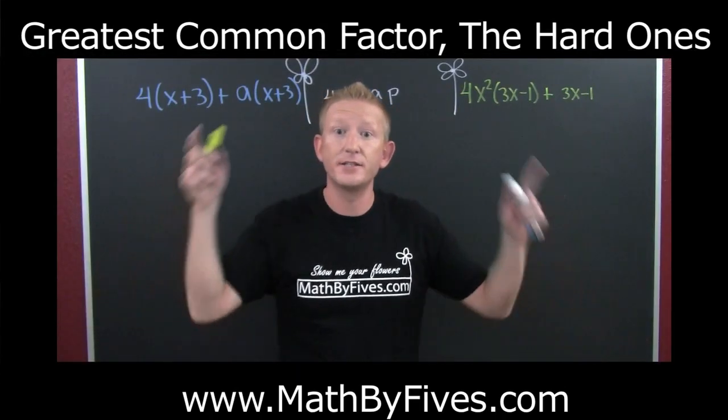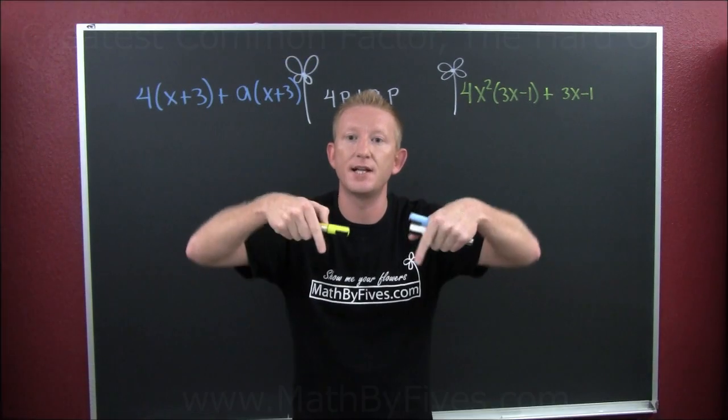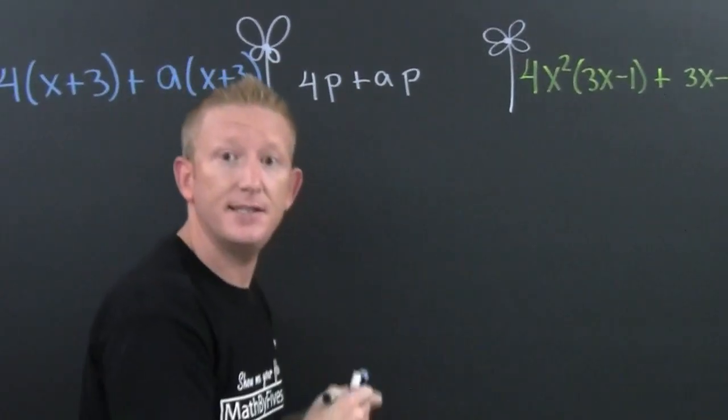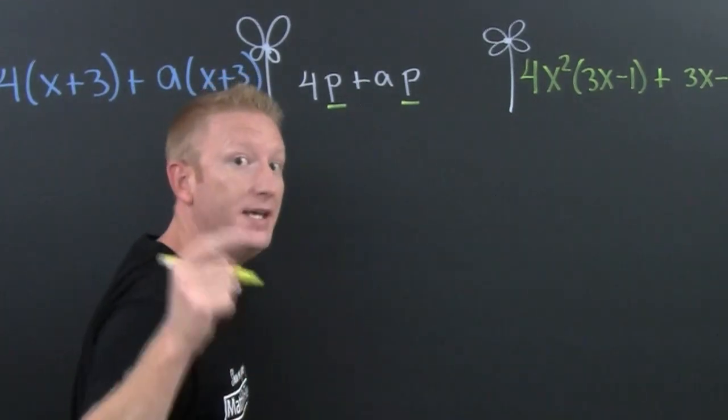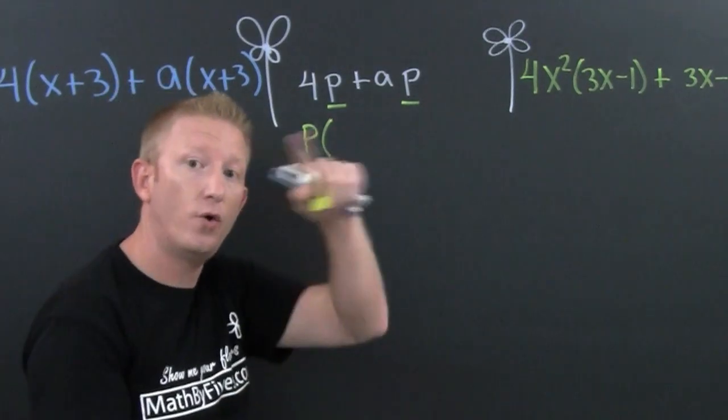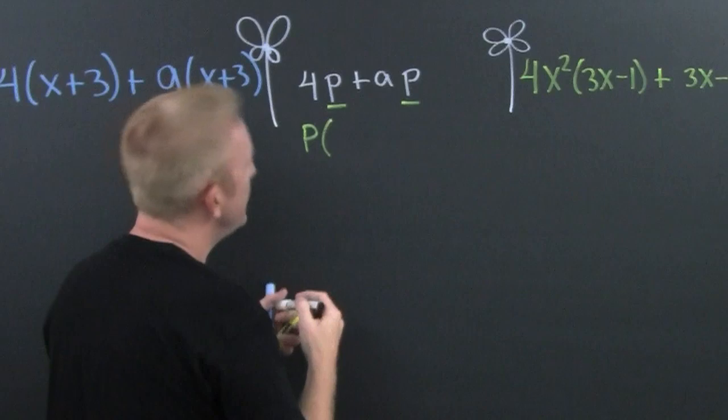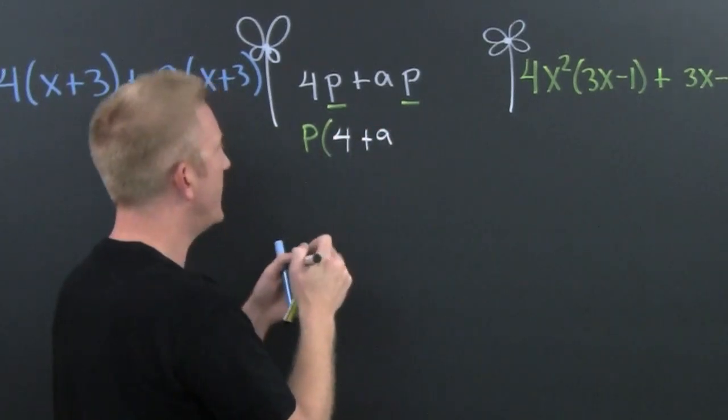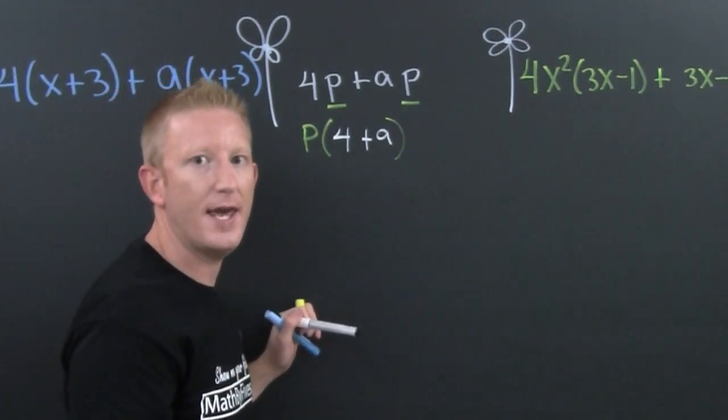You ready? Greatest common factor, the hard one. But first let's go back to that last video. Right here I see that I have a common factor of p. So what do we do with that p? We pull that p out, we factor out the p. You could factor it out in front or factor it out back, and the leftover on the inside are the leftovers, that's that 4 plus a. That is an a and not a nine. Nines are just a's with long hair.